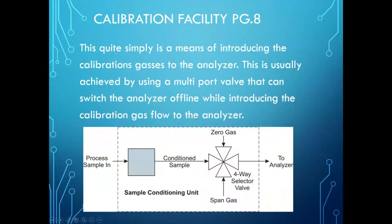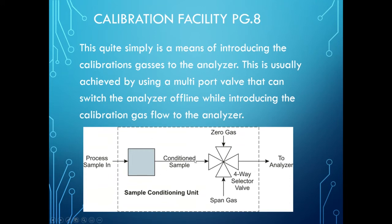One of the five functions of the sample handling system is the calibration facility — providing a means of introducing calibration gases to the analyzer. This is usually achieved using a multiport valve that can switch the analyzer offline and introduce zero gas and span gas. In normal operation the process sample goes to the analyzer; by turning the valve you can introduce zero or span gas. This is typically introduced after all the sample system hardware but before the analyzer.